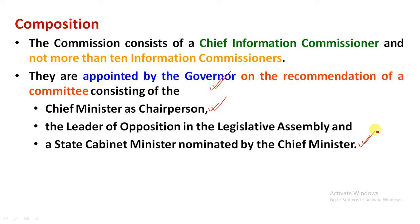The committee considers persons of wide experience in public life, including law, science and technology, social service, management, journalism, media, administration, and governance. Generally, retired IAS officers are appointed as State Information Commissioners. Importantly, the appointed person must not be a sitting MLA or MP, must not be connected to any office of profit, and must not have any political party-related work.